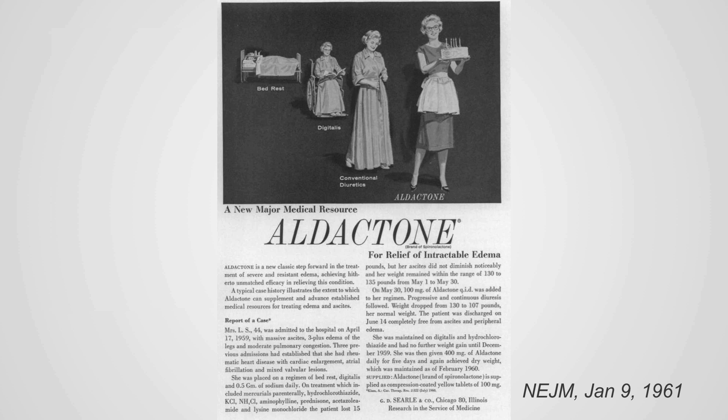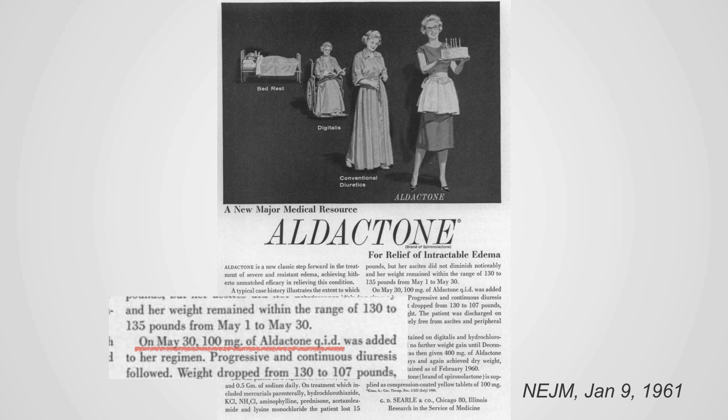Aldactone does not have much of a diuretic effect at typical doses — that is probably a dose-response phenomenon. Today we typically use about 25 milligrams daily. But since aldactone is one of our oldest diuretics, if you go back to the early 1960s and look at ads, there are case reports describing using aldactone at 100 milligrams four times daily — 16 times the typical dose we use today. At that dose, they got a big diuretic effect, but at the cost of very high doses and probably a lot of hyperkalemia.